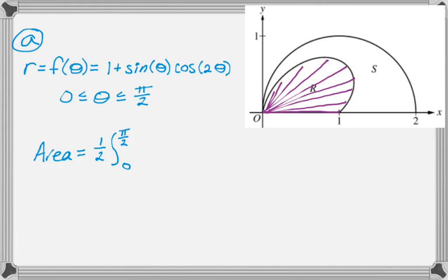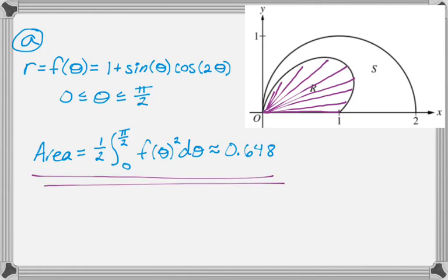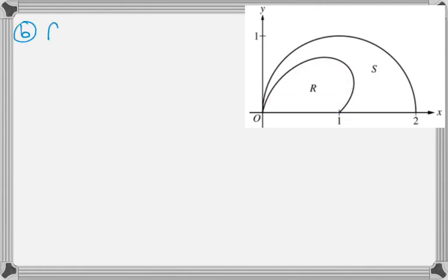And then integral from 0 to pi over 2. And then the second thing people forget is it's going to be F of theta, but then you have to square F of theta, and then d theta. And then you just grab a calculator and let it tell you that that's approximately 0.648, and that's really all there is to it. So let's take a look at B.